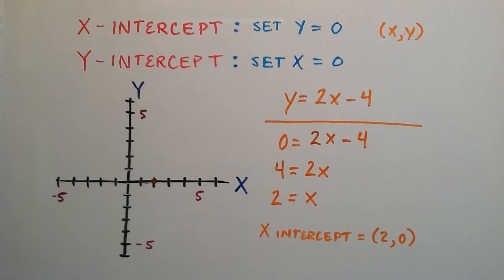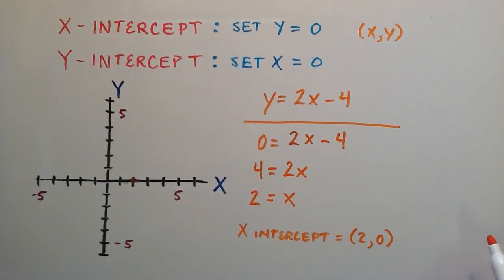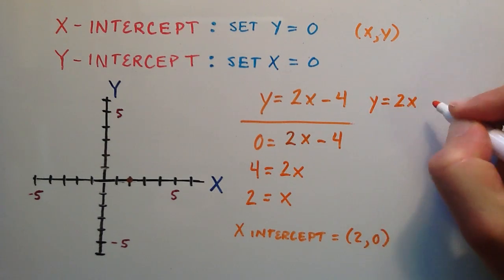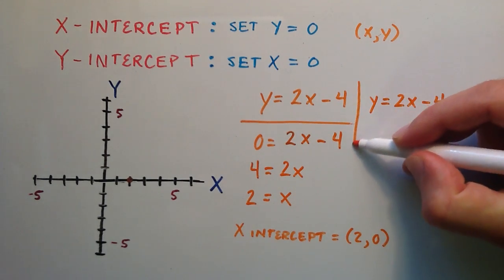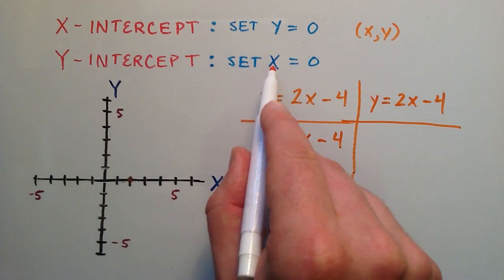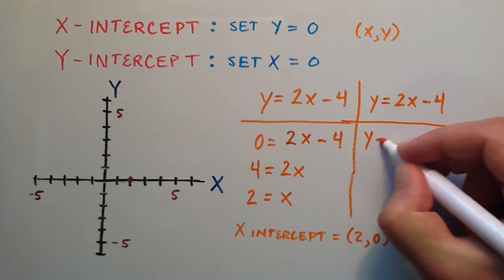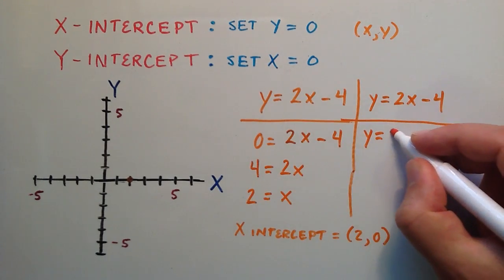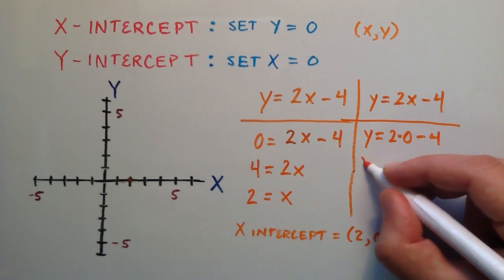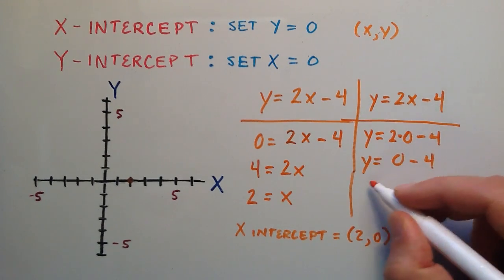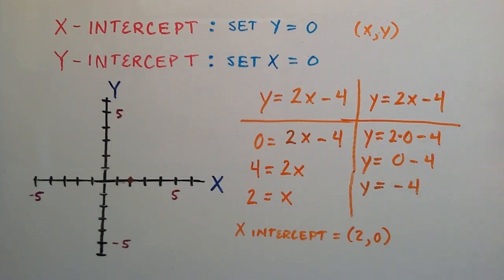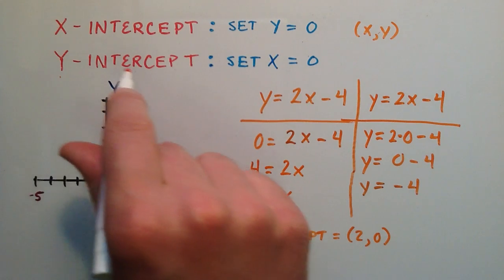Now let's find the y intercept of our line. We use the same kind of process with y is equal to 2x minus 4. This time we set x equal to 0, so we rewrite it as y is equal to 2 times 0 minus 4. Anything times 0 is simply 0, so y is equal to 0 minus 4, which gives us y is equal to negative 4. This is the y component of the y intercept.